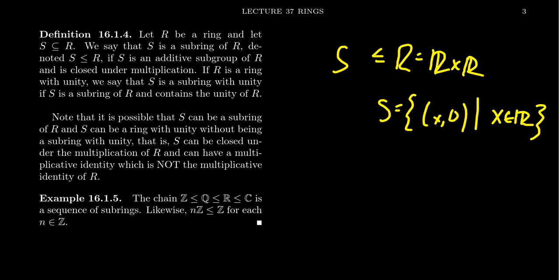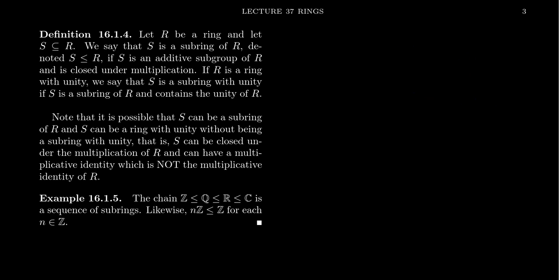S will have a unity, and S is a subring, but the unity in S is not the unity in R. In fact, S doesn't contain the unity of R. It has a different unity. So it's very important when you think of rings, subrings with unity or not, to be a proper subring with unity, you have to have the same unity as before.